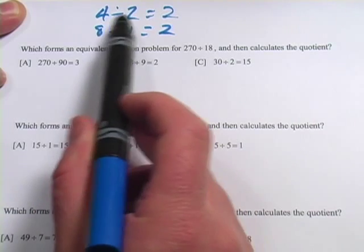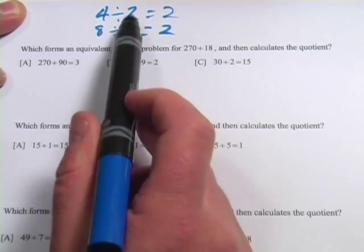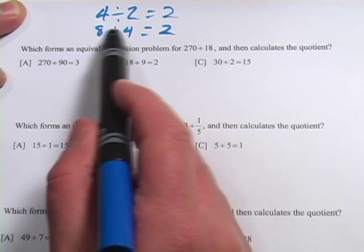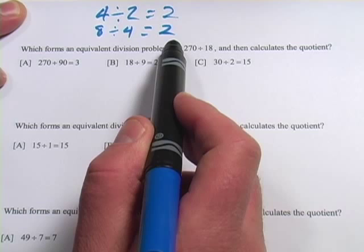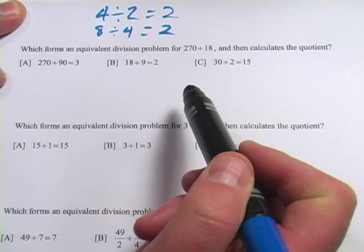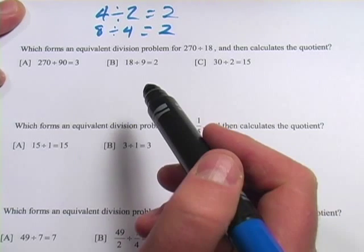You can kind of see when you look at 4 and 2 and 8 and 4, they're related to each other. In one of them, the numbers are just both twice as big. You could have 16 divided by 8. That equals 2. That would be another equivalent division problem. So that's the idea that we're working with here.